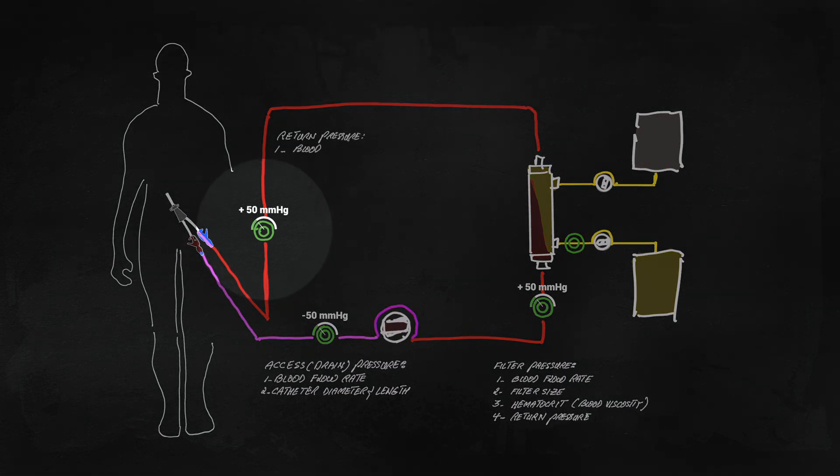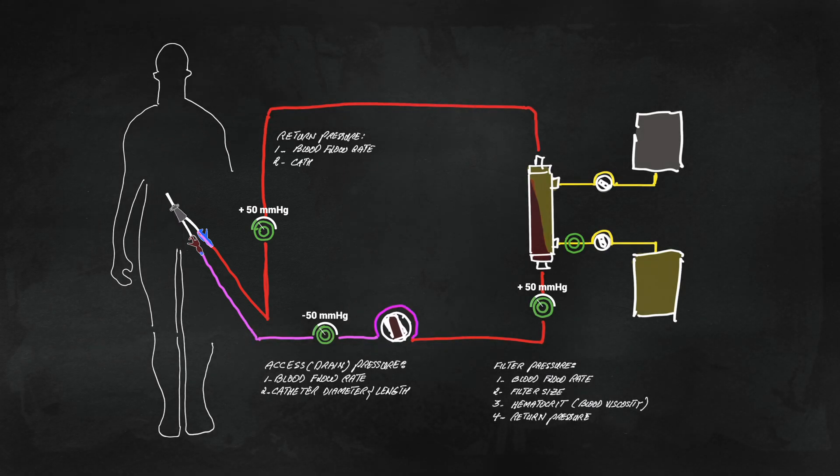Return pressure, like the access pressure, is determined by blood flow rate and catheter characteristics.